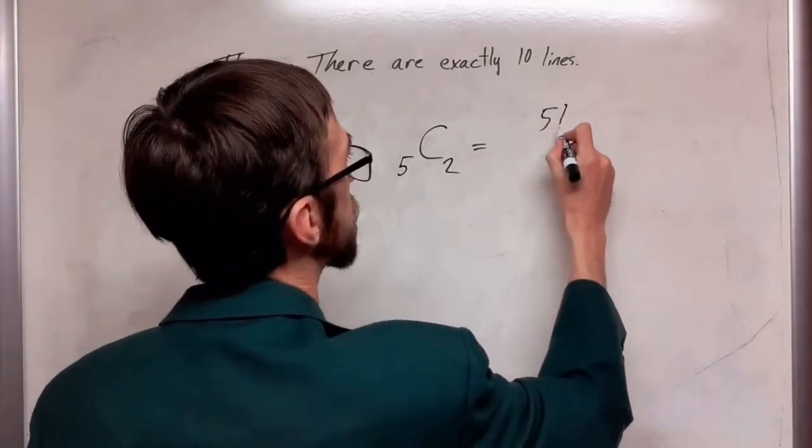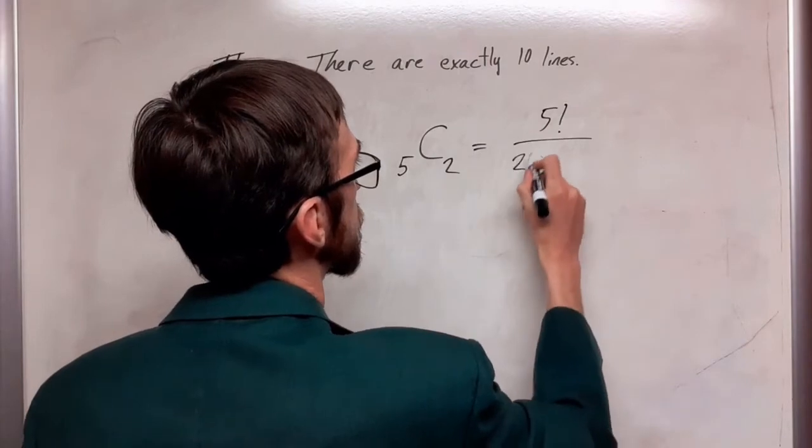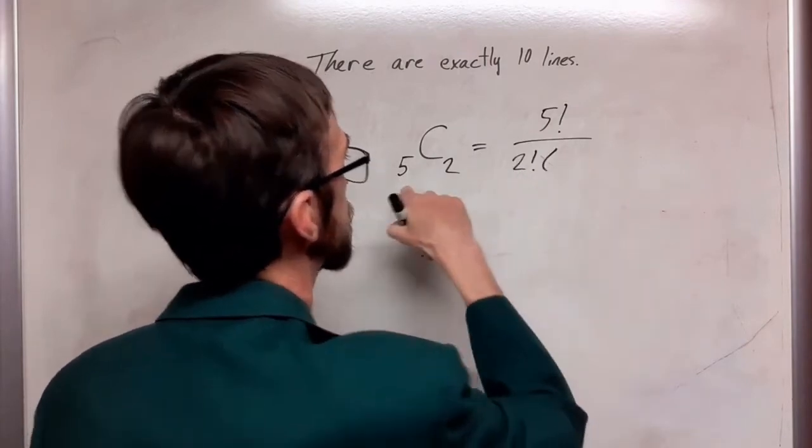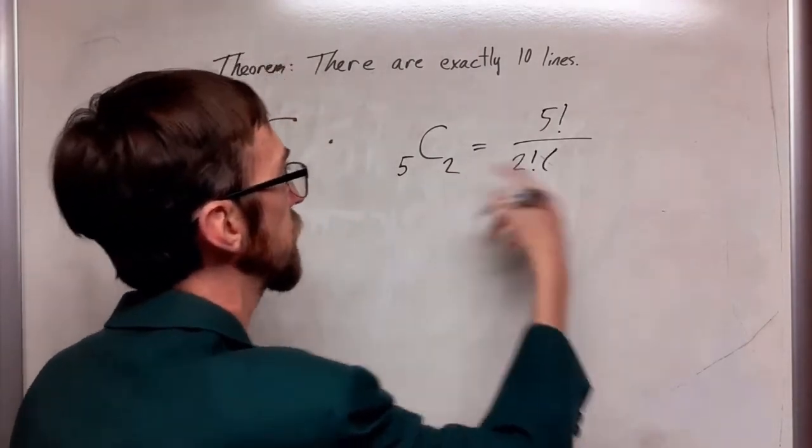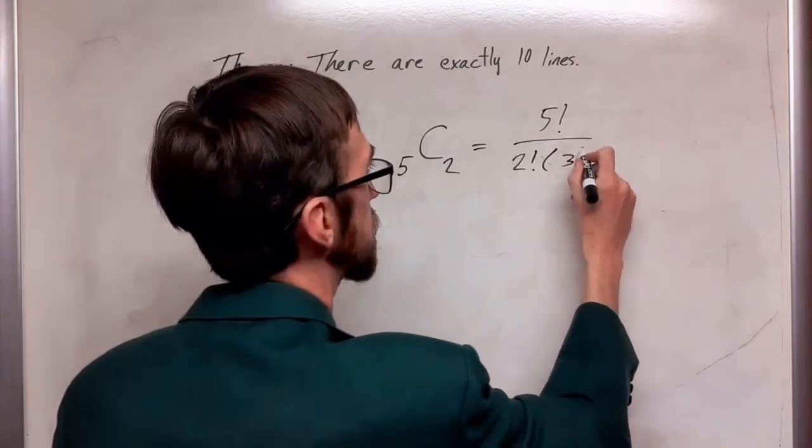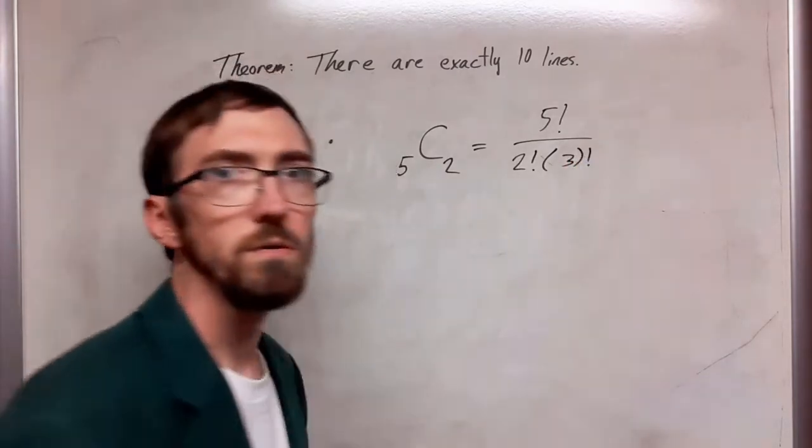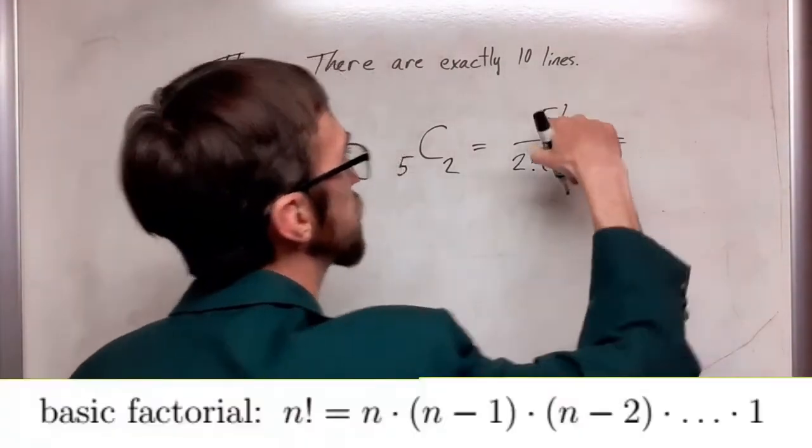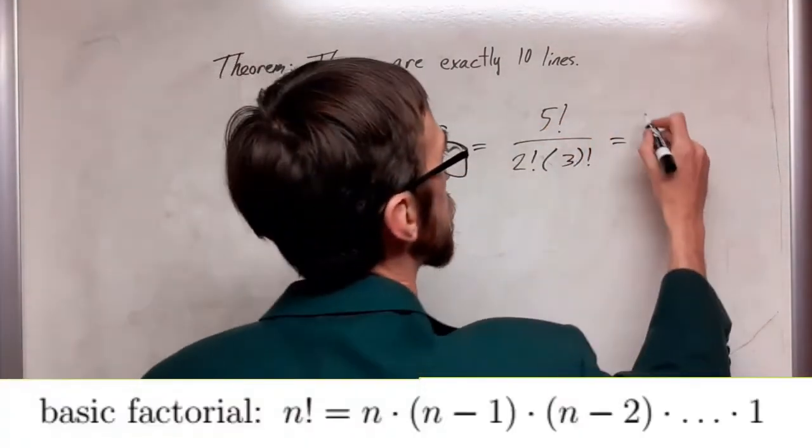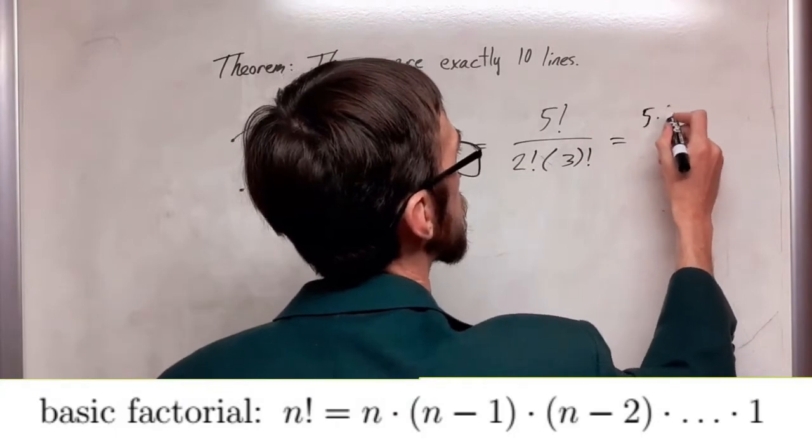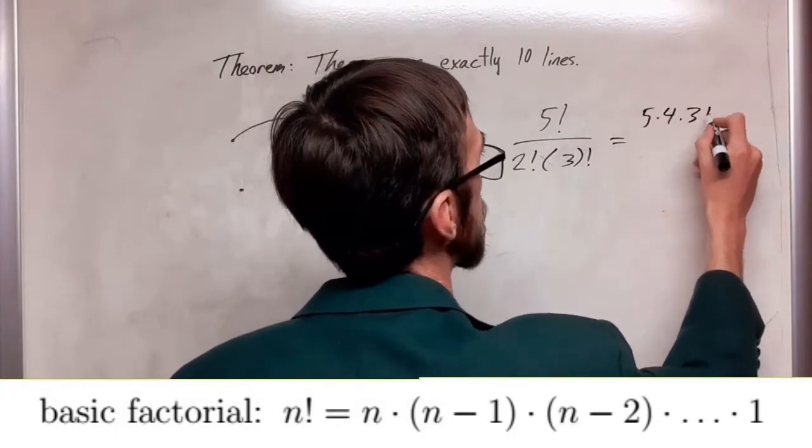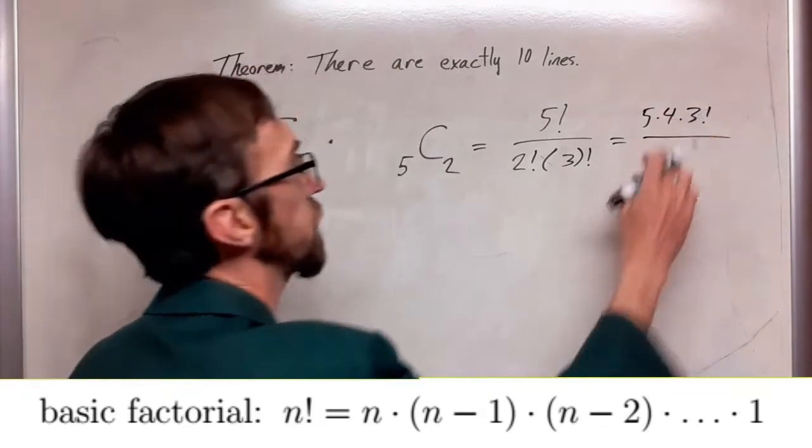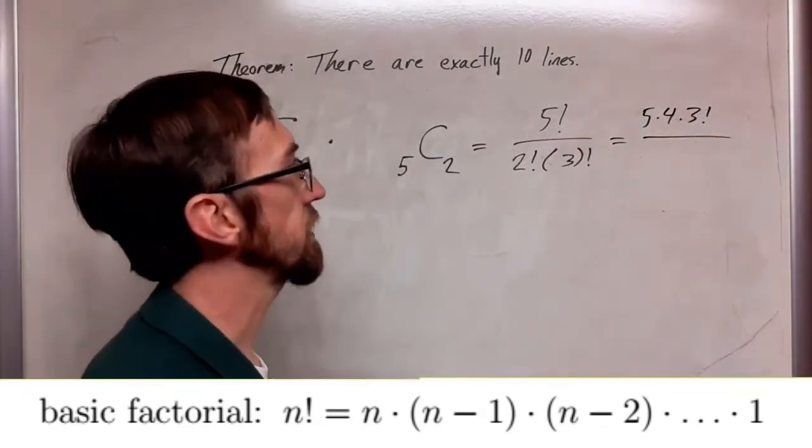This will be 5 factorial divided by 2 factorial times the difference of these two numbers, which is 3 factorial. And so as I work through simplifying this, I'm going to split the 5 factorial in the numerator into a few parts. I'm going to do 5 times 4 times 3 factorial. If you multiply this together, you get exactly this.